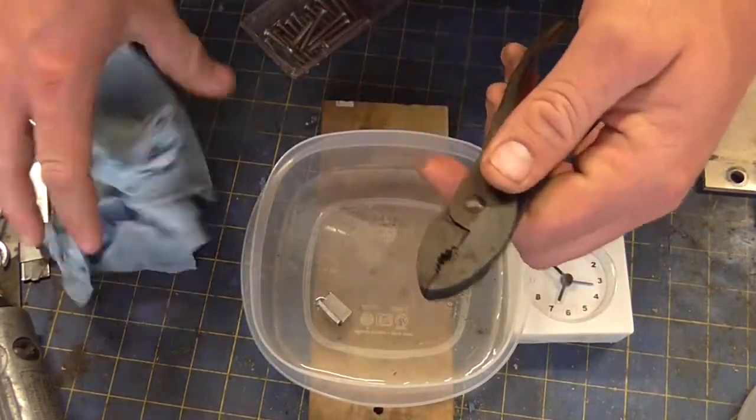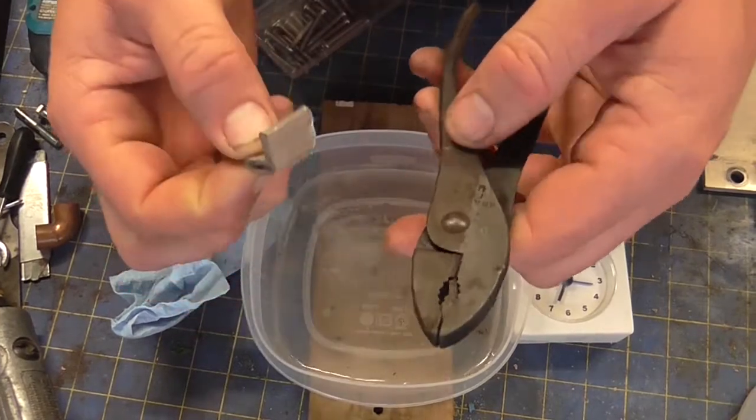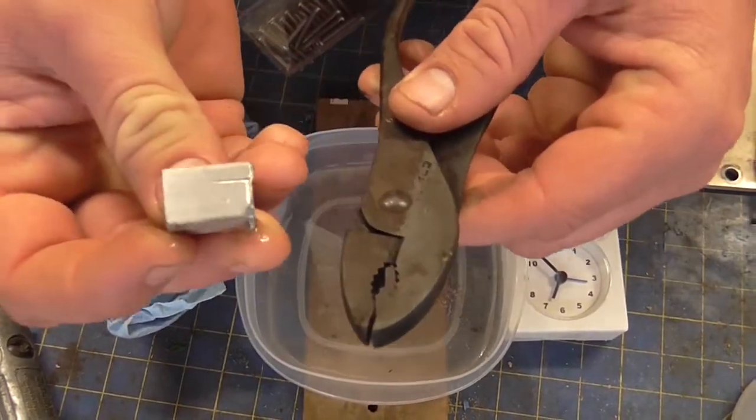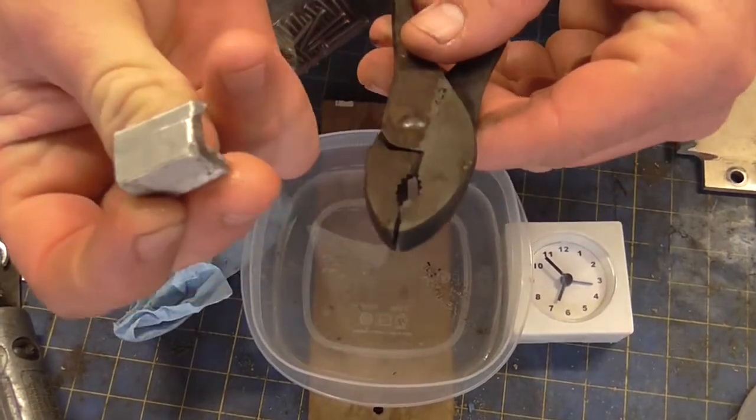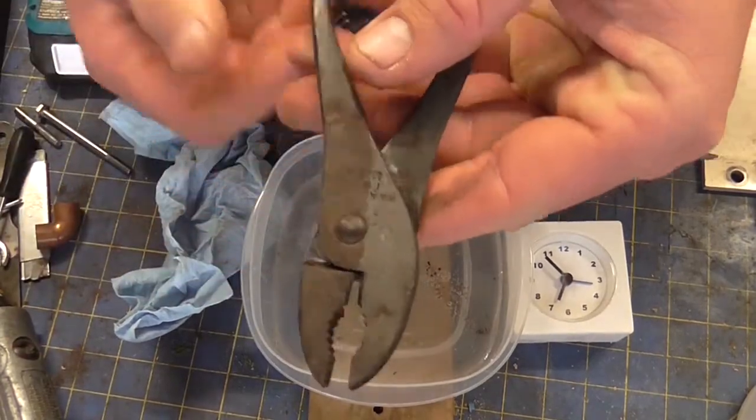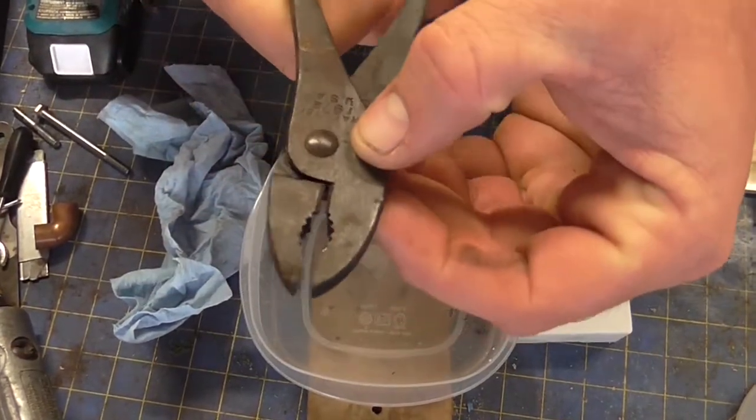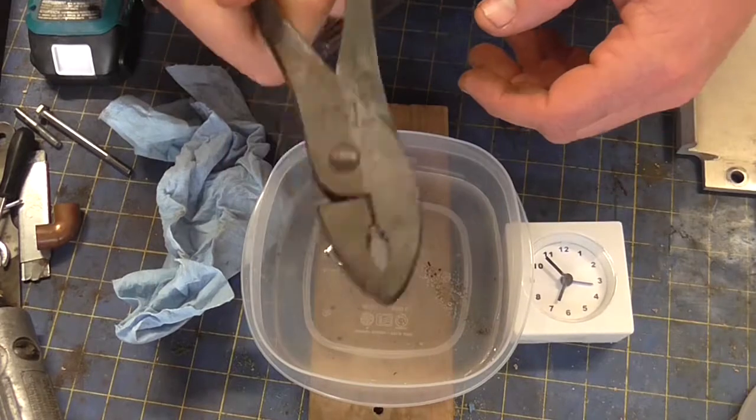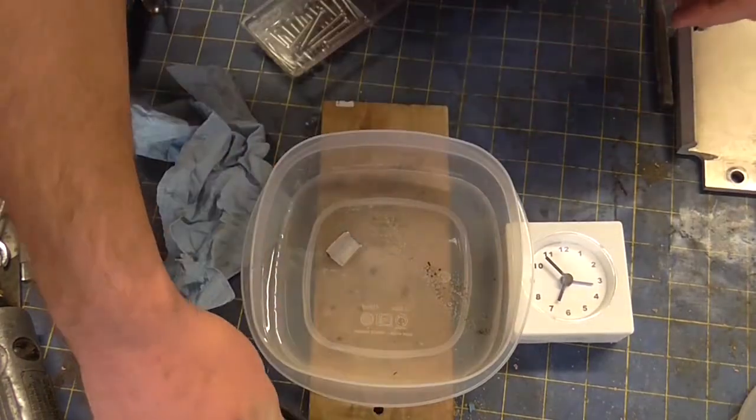So I guess to answer the question of does vinegar hurt aluminum - doesn't seem to be any indication that it does. And that obviously removes rust. So that's good to know. Anyway, thanks for watching.